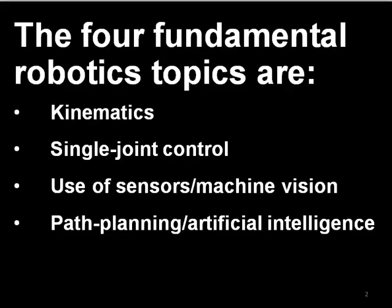In this class, we'll be looking at the four different fundamental robotics topics, which are kinematics, single joint control, the use of sensors — which includes machine vision — and path planning and artificial intelligence. I'm now going to give you a very brief overview of what each of these topics means. When we get to the beginning of each of these topics throughout the class, I'll give a more in-depth explanation of what the topic covers.